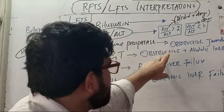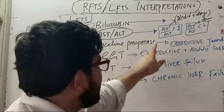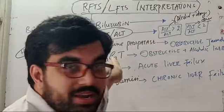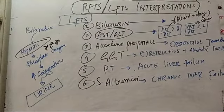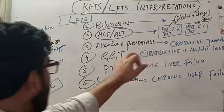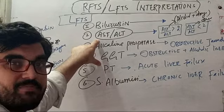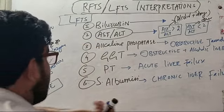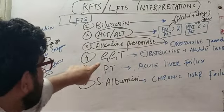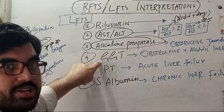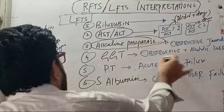GGT is raised in both obstructive jaundice and alcoholic liver disease. If alkaline phosphatase is raised but GGT is normal, the alkaline phosphatase is likely coming from bone, so you need to look at bone pathology — both must be raised together in obstructive jaundice. In pregnancy, alkaline phosphatase is produced by the placenta, so GGT is the most reliable marker to use.